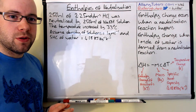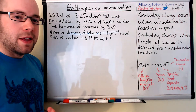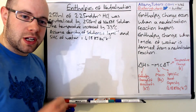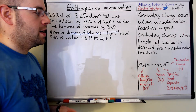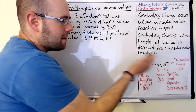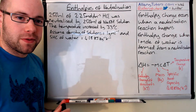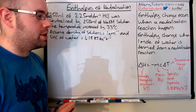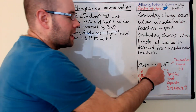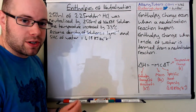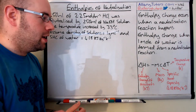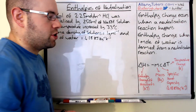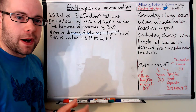We've got an equation that we can use to work this out. The equation is: enthalpy change, which is delta H, measured in kilojoules — watch out for that. This equals minus M, where M is the mass of the solutions in kilograms — it's really important to use kilograms. C is the specific heat capacity, which for water is 4.18 kilojoules per kilogram per Kelvin, and the temperature change is in Kelvin as well.